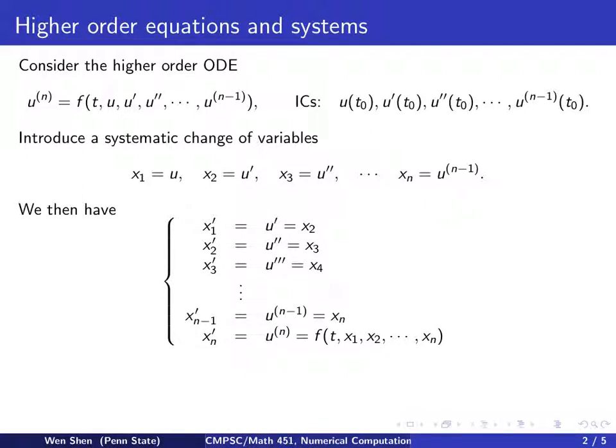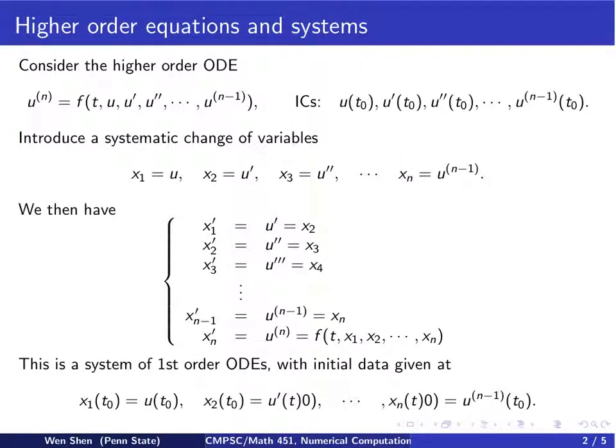The last equation is different. xn prime, if I differentiate xn, I get u to the nth derivative, which is the left-hand side of my ODE. I have to use my ODE now. My ODE says that derivative equals to f as a function of all these. But keep in mind that I want to write everything in terms of the x's now, that's my new unknown variable. I see u is x1, u prime is x2, u double prime is x3, and so on. So I would change it into x1, x2, and xn as the input to this function f. We see now we changed a higher-order equation into a system of first-order equations where the number of equations here exactly matches the order of the scalar higher-order equation.